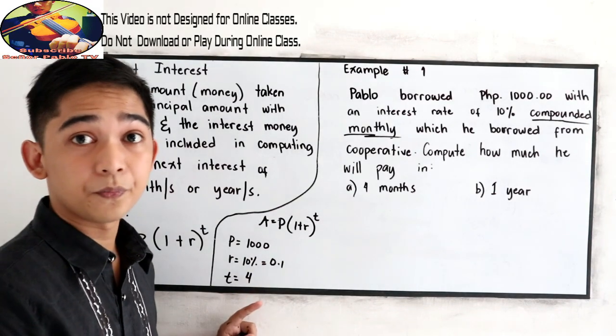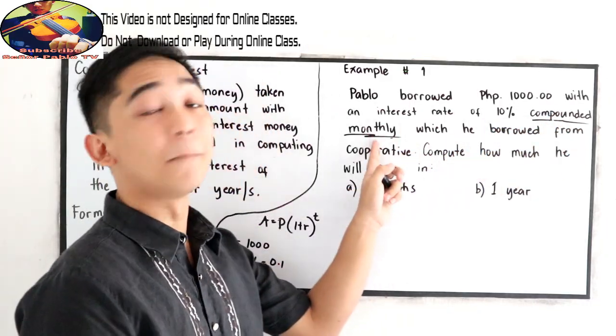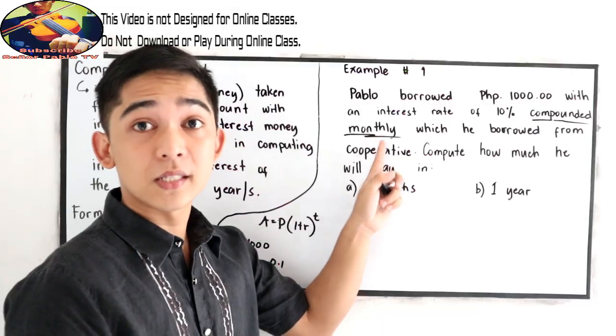Do we need to divide by 12? No, because in our given, that is compounded monthly, so our basis is months.